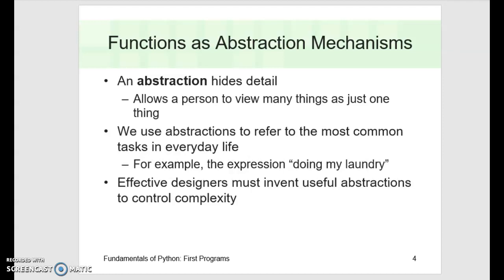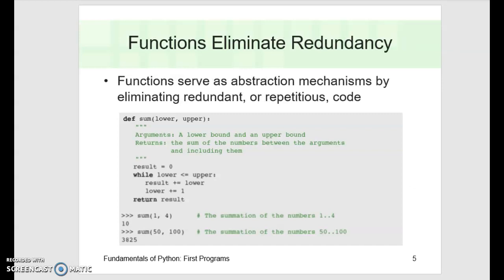Even though all of those steps are involved, it's easier to say 'I'm going to make a sandwich' instead of 'I'm going to walk into the kitchen, open the cupboard, pull out the bread, open the bread, take out a piece of bread.' We create these abstraction mechanisms to eliminate redundancy. When we're going to create a piece of code that will be used over and over again, it is best to create it as a function. It also helps your program read easier and is more efficient, because we don't have to repeat these pieces of code.